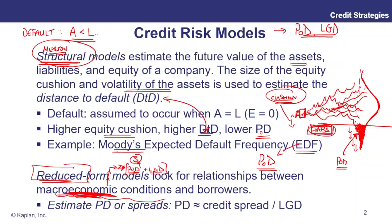These macroeconomic conditions could be top-down. We're about to look at an older version of a reduced form model — the Altman Z-score. You could argue that's reduced form, but it's more fundamental in terms of the financial ratios of an issuer rather than overall macroeconomic conditions. The general idea is that we use conditions or features of a borrower to inform our probability of default and our loss given default, which therefore informs our spread.